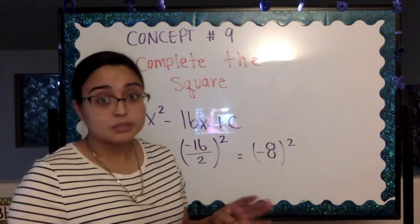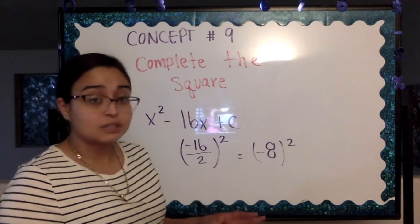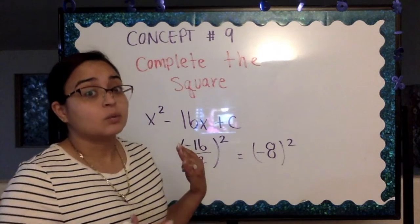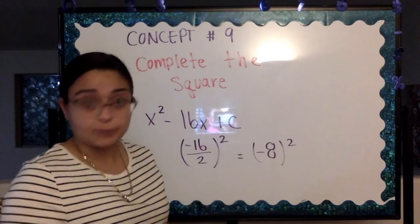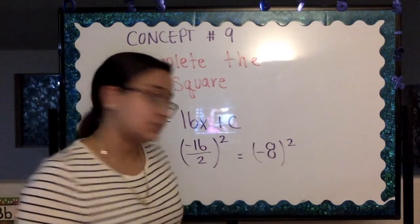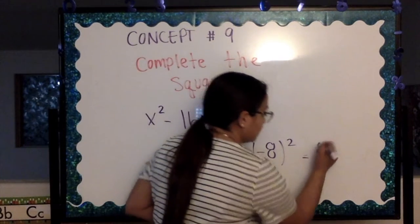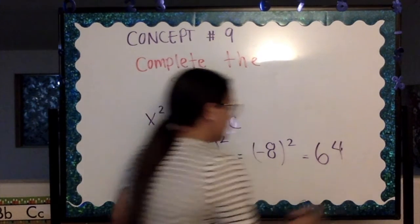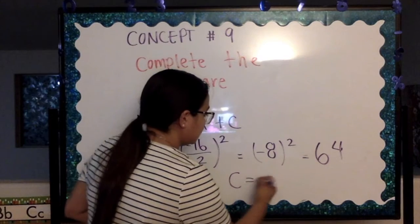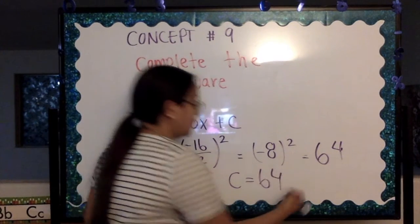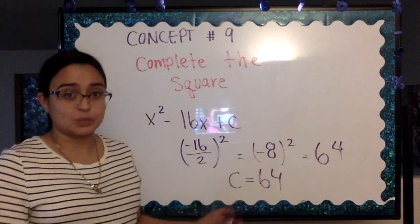We're multiplying two negatives so our answer would be positive, and it would be a 64 because 8 times 8 equals 64. Meaning that the value of c is 64. And that is how we completed the square.